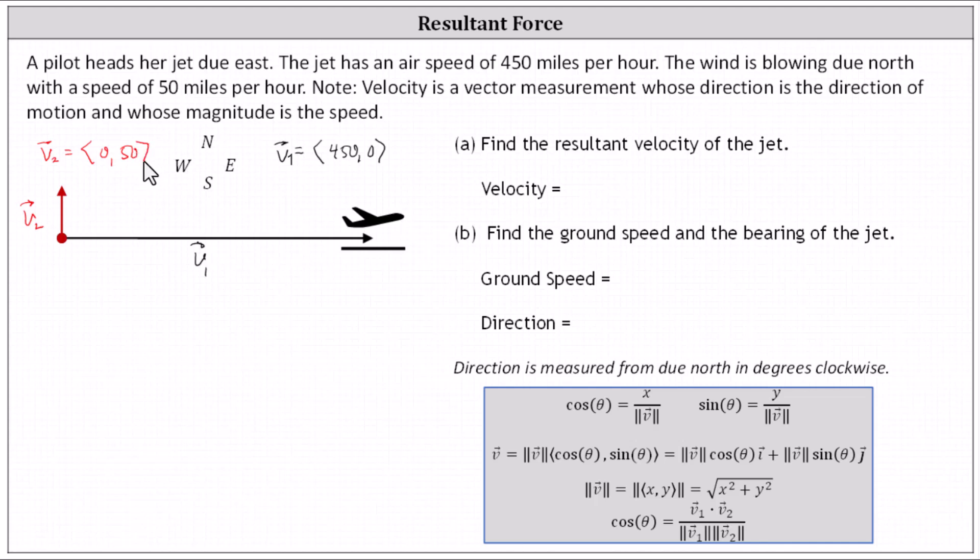And now to find the resultant velocity of the jet, we need to determine the sum of these two vectors. We'll call this vector r. To add the two vectors, we add the corresponding components. The resultant vector has an x component of 450 and a y component of 50. This is the resultant velocity vector.